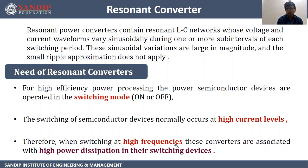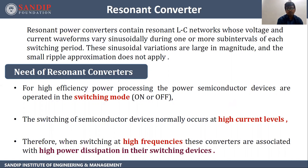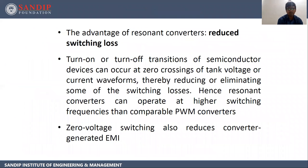What is the need for resonant converters? For high efficiency power processing, the power semiconductor devices are operated in the switching mode — on or off. The switching off of semiconductor devices normally occurs at high current level. Therefore, when switching at high frequencies, these converters are associated with high power dissipation in their switching devices.